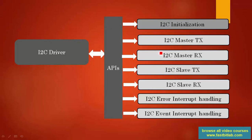We are going to create master TX, master RX, slave TX, and slave RX APIs, and after that some interrupt handling APIs we have to support — we'll explore interrupts later. Apart from this, you already know the other APIs needed: peripheral control, peripheral clock control, peripheral enable/disable, and other peripheral control APIs. We'll implement all those things in the next lecture.